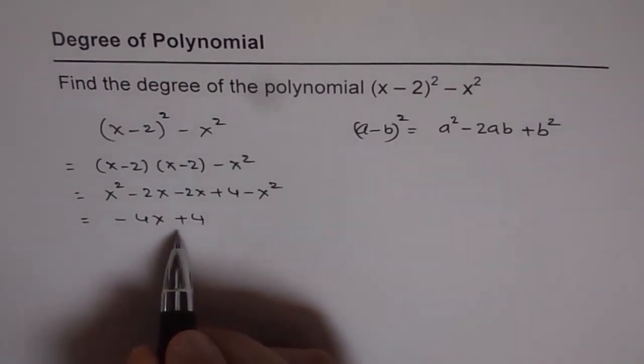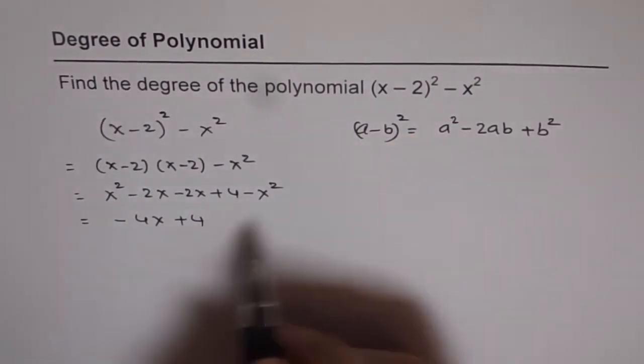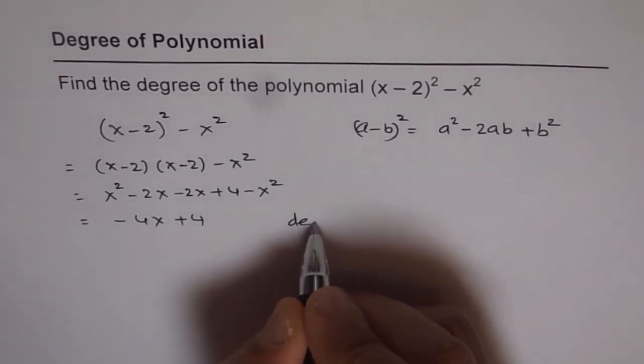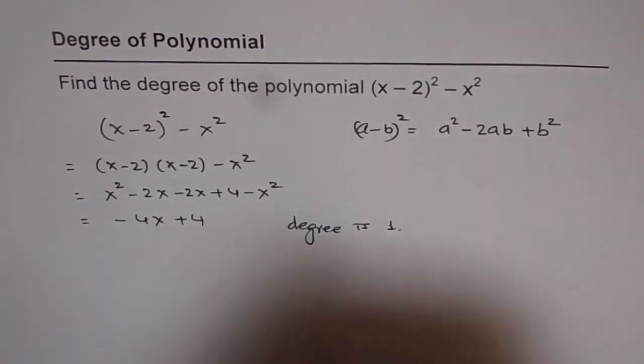And the degree of this is just 1. Degree is not 2, as it seemed to be. So therefore it is important to simplify these polynomial expressions and then answer about the degree. We see that the degree is 1. It is a linear polynomial.